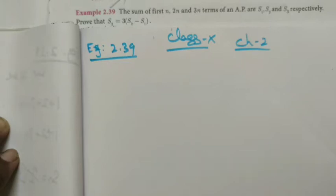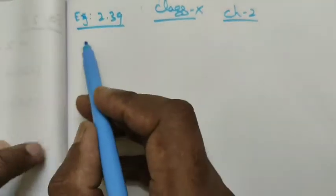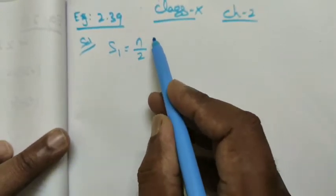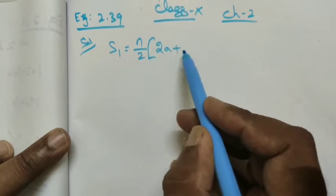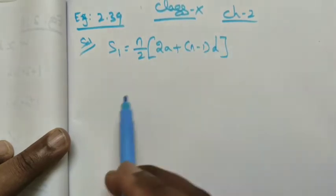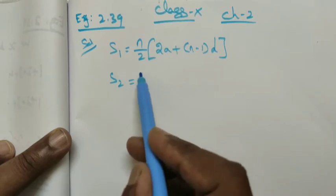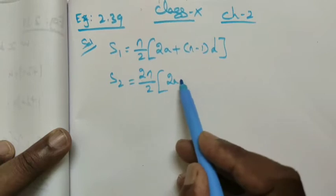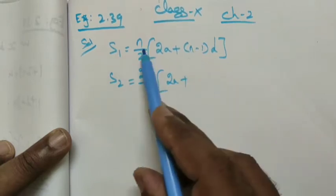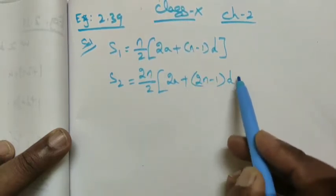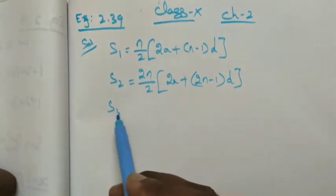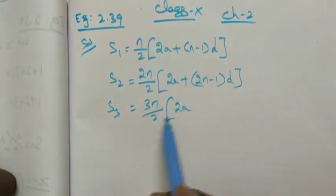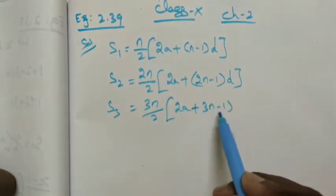Solution: S₁ = n/2[2a + (n-1)d], S₂ = 2n/2[2a + (2n-1)d], S₃ = 3n/2[2a + (3n-1)d].